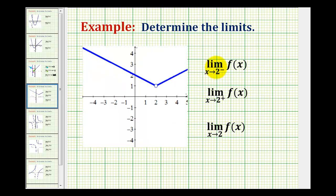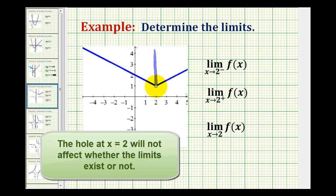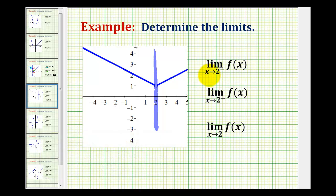Let's take a look at three more examples. Notice all three of these limits are approaching positive 2, but this first limit is only from the left side or negative side, the second limit is only from the positive side or right side, and the third limit is from both sides of positive 2. So let's go ahead and sketch a vertical line at x equals 2. For this first one-sided limit we're approaching positive 2 from the negative or left side; for the second limit we're approaching from the positive side or right side; and for the last limit we're approaching from both sides.